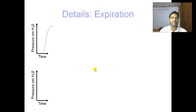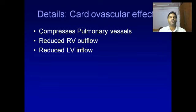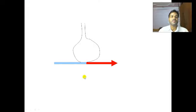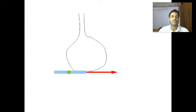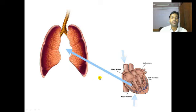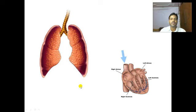The cardiovascular effects of mechanical ventilation: compression of the pulmonary vessels reduces RV outflow and reduces LV inflow. When the alveolus expands, it compresses the capillaries, reducing blood return to the left side of the heart. When there is an increase in intrathoracic pressure, cardiac output decreases due to reduced return of blood to the left side of the heart.